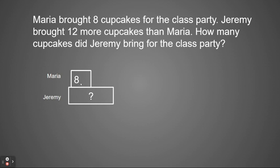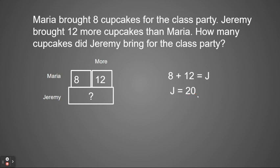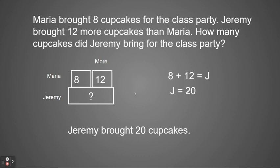We're going to have a portion of Maria's plus the more that Jeremy brought to equal our total. We knew he brought 12 more. So when I have a bar model that looks like this, it has two parts and a missing total. That tells me I need to add. So let's look at what that equation would look like: eight plus 12 equals J, and J would equal 20. So Jeremy brought in 20 cupcakes. That was an example of an additive word problem using a bar model.